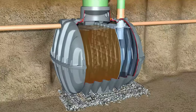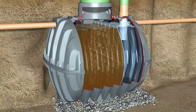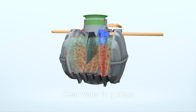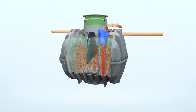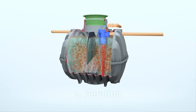A treatment plant, like a septic tank, has an inlet and an outlet point and is made up of two chambers. The primary chamber, similar to a septic tank, will store the waste coming from the property before it moves to the secondary chamber, and the secondary chamber is where the actual treatment happens.